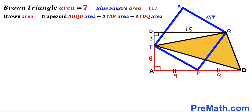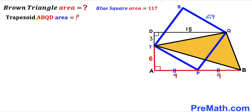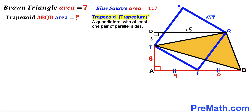We can see that the brown shaded triangle area equals the area of the big trapezoid ABQD minus the area of right triangle TAB minus the area of right triangle TDQ. Our task is now to calculate each of these three areas: the trapezoid ABQD, the right triangle TAB, and the right triangle TDQ.